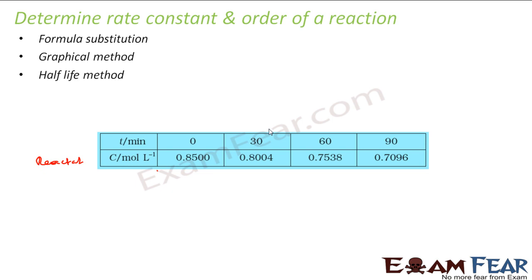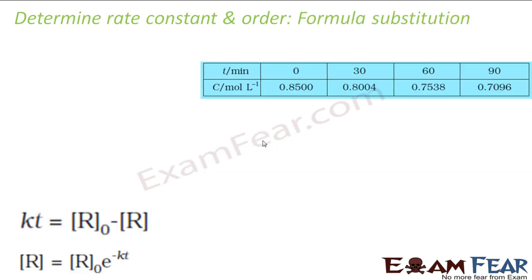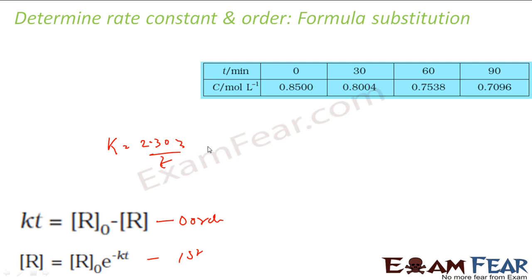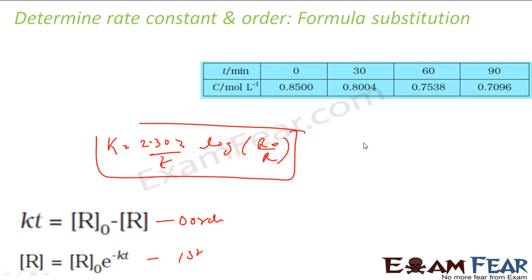The next method is the graphical method, and the third is the half-life method. For the formula substitution method, the formula for zero-order is k = (r₀ - r) / t, and the formula for the first-order reaction is k = (2.303 / t) × log(r₀ / r).